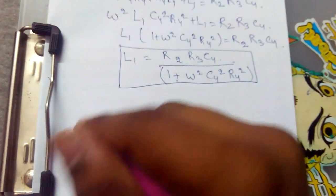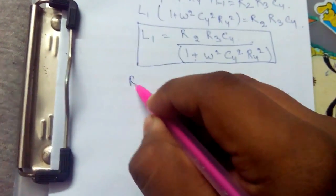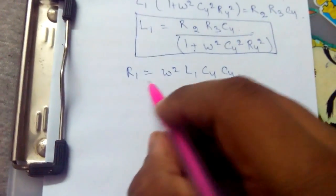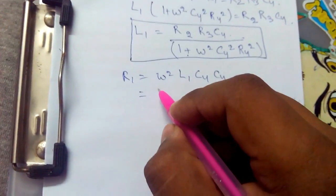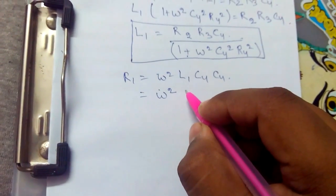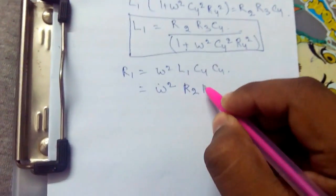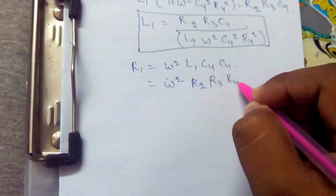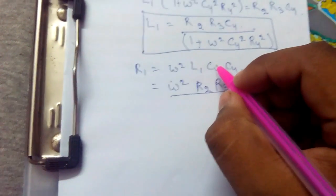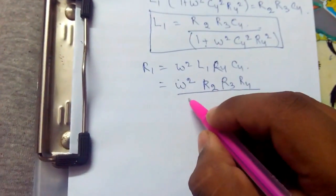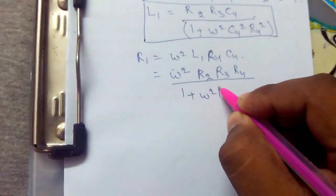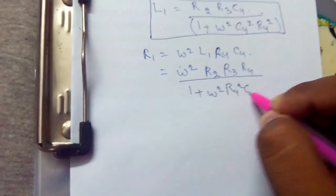Therefore, substituting the value of L1 in the previous expression for R1, where R1 was omega squared L1 C4 R4, R1 would be omega squared times (R2 R3 C4 divided by 1 plus omega squared C4 squared R4 squared) times C4 R4. Simplifying directly: R1 equals R2 R3 R4 divided by (1 plus omega squared R4 squared C4 squared).